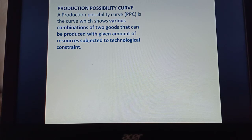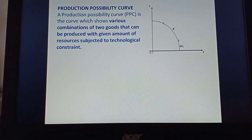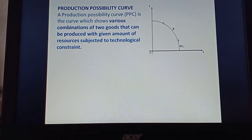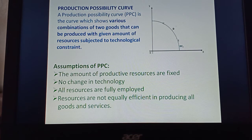Let us consider two goods X and Y. According to Professor Samuelson's definition, it is the combination of two goods that can be produced. We take commodity X on the horizontal axis and commodity Y on the vertical axis. Combinations like C, D, and E represent how much X and Y are produced — as X increases, Y decreases. When these combinations are joined, the locus gives us the production possibility curve. The assumptions include: fixed productive resources, no changing technology at a point in time, all resources are fully employed, and resources are not equally efficient in producing all goods and services.